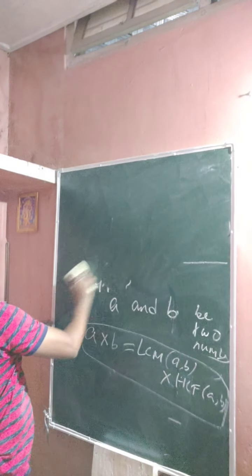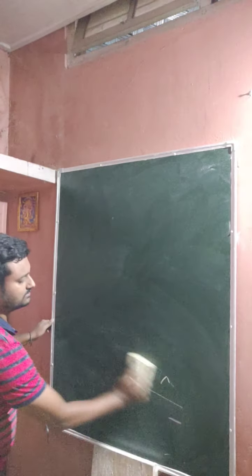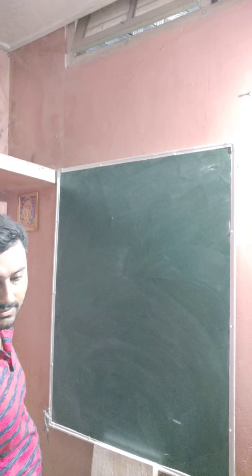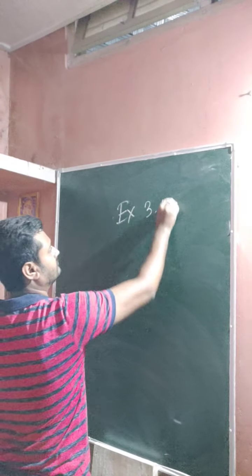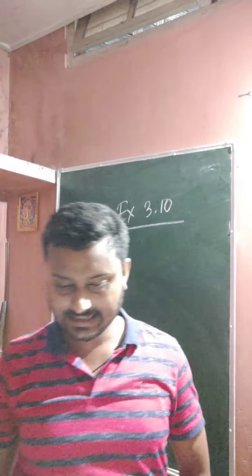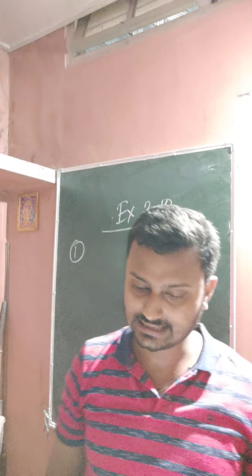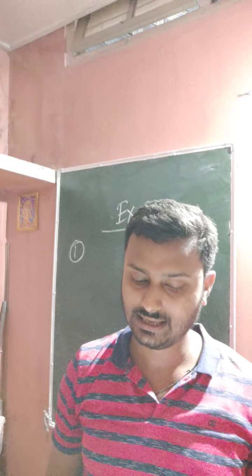So we have to solve some questions using this formula, okay? So come to the exercise number 3.10. So question number one: the HCF and the LCM of two numbers is 15 and 450 respectively. If one of the numbers is 75, what is the other number?